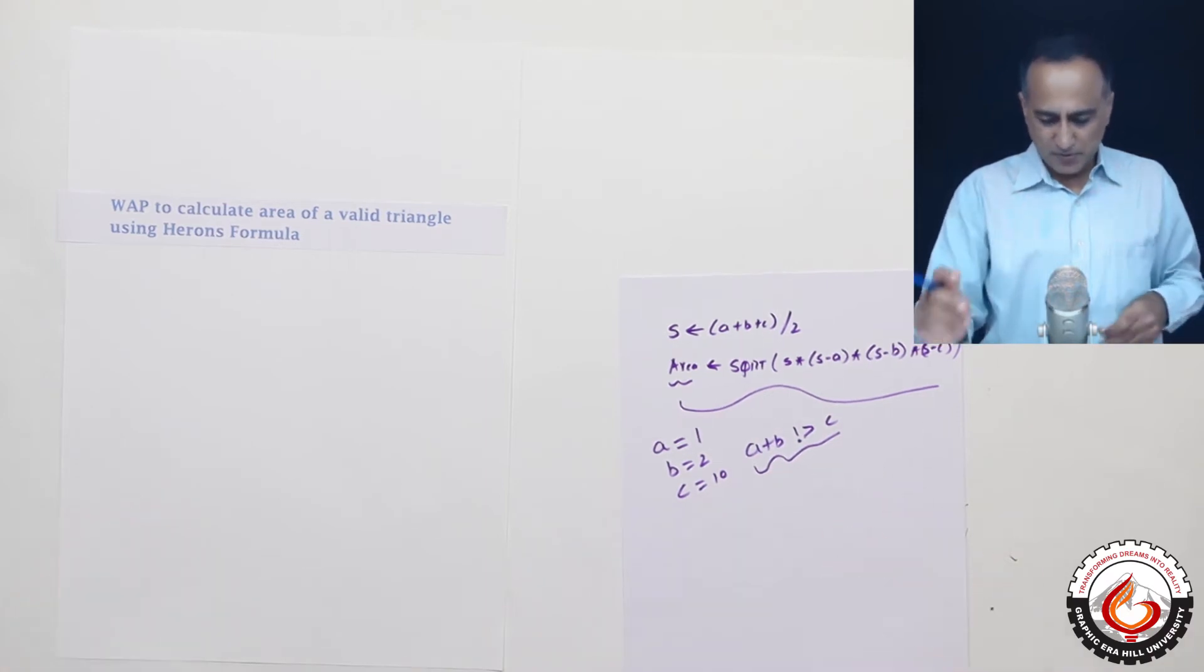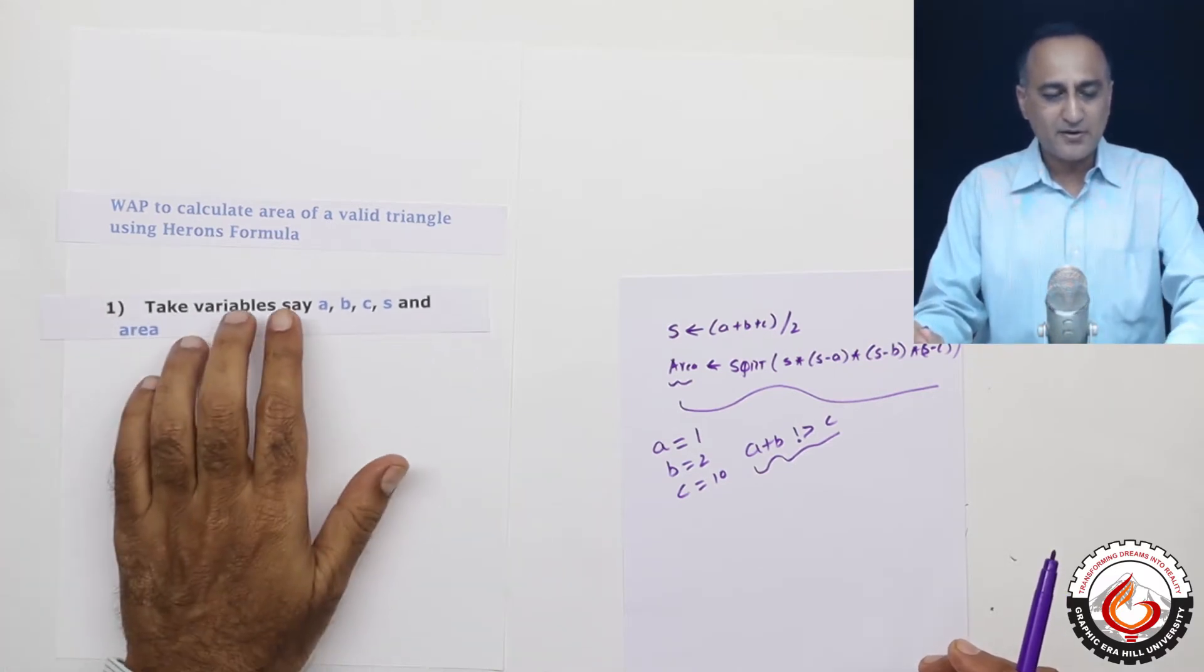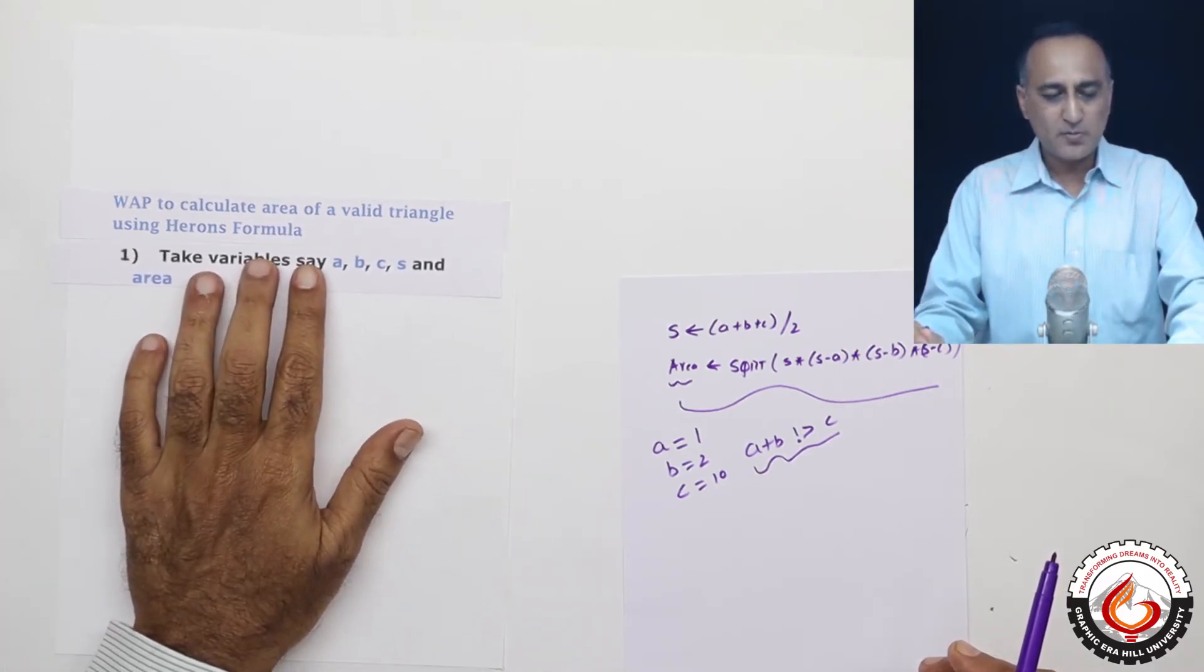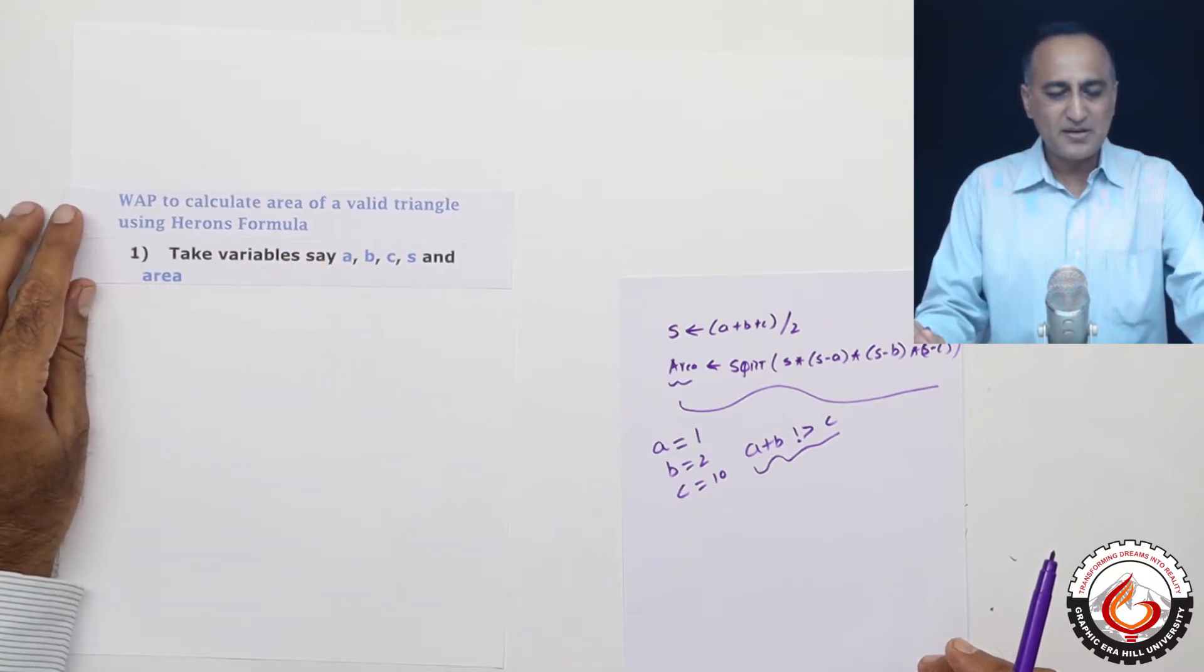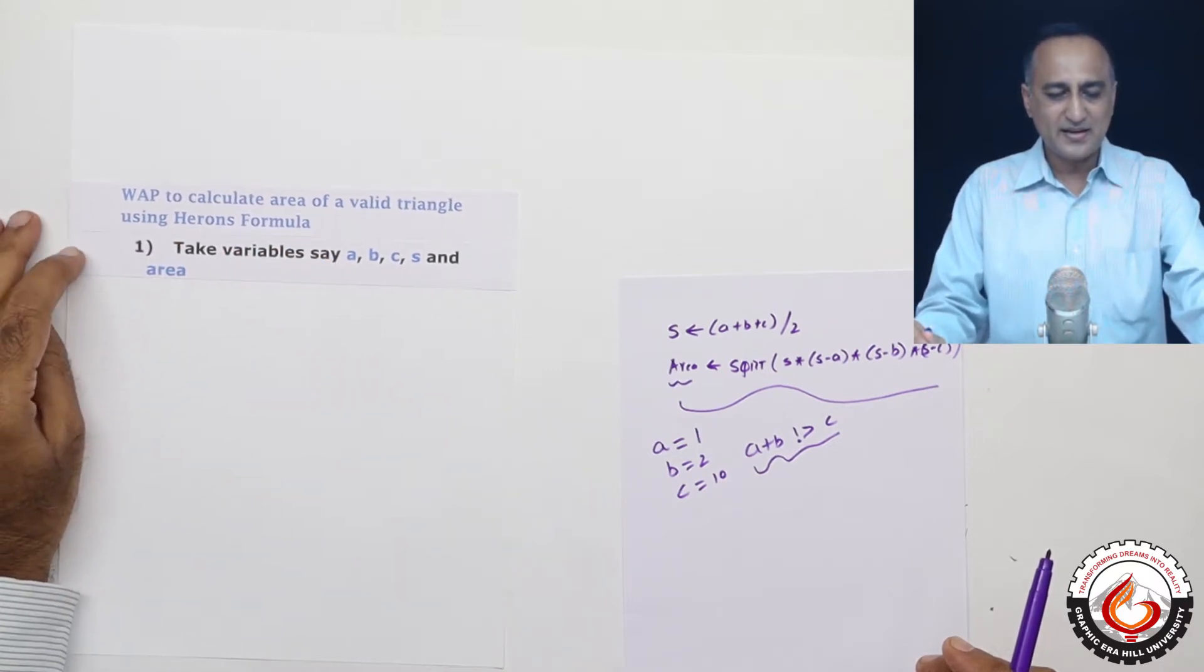So our first step will be to tell what are the variables we are going to use in this particular pseudocode to find the area of a triangle. So first I'm going to say take variables A, B, C, S and area.